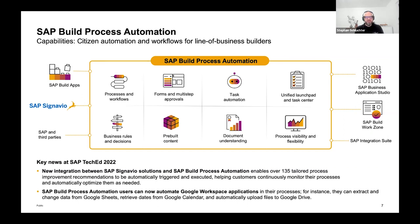Once processes are running, someone needs to be there to push a button for approval. You can consume tasks within the Unified Launchpad, and you can also create the forms for those tasks within the same environment. This is one of the big advantages of SAP Build Process Automation — you can do everything in a single environment, leveraging a citizen developer experience.